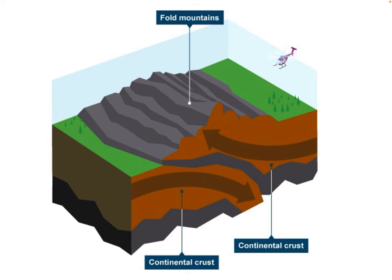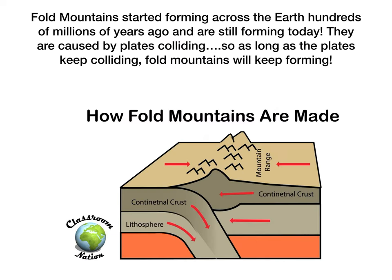It can happen where two continental plates are pressed and pushed against each other, or where an ocean plate is buckled against a continental plate. The funny thing about fold mountains is they started forming millions and millions of years ago — hundreds of millions of years ago across the Earth — but they're still actually forming today. If you think of the Alps and the Himalayas, they're fold mountains and they are actually still being buckled and pushed upwards. So as long as plates are colliding across the Earth, you're going to get fold mountains forming.